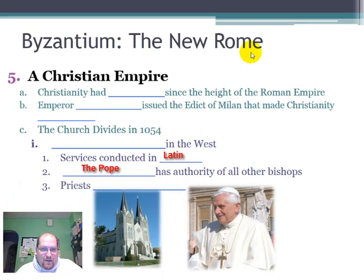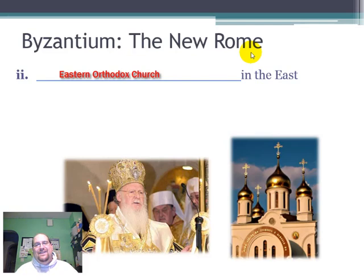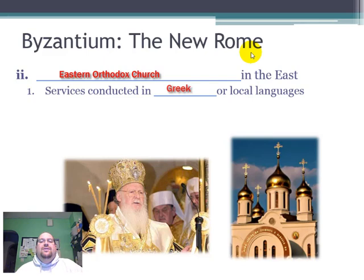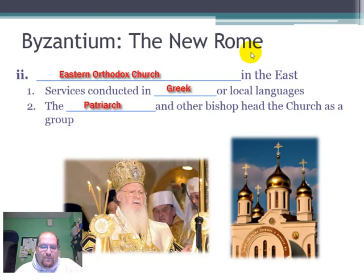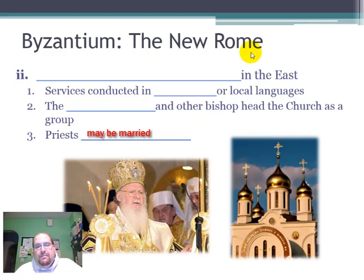Those are the three key parts of the Roman Catholic Church that differ compared to the Eastern Orthodox Church in the East. There, services are conducted in Greek or local languages. The Patriarch and other bishops head the Church as a group — so it's not just one person in charge, like the Pope. It's the Patriarch, or Father of the Church, and the congregation together. Priests may also be married if they choose. These two branches believe in the same Christ and the same general principles, but differ in how they practice their faith.